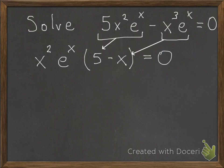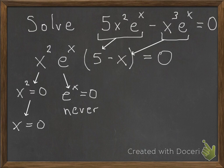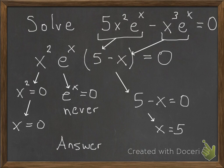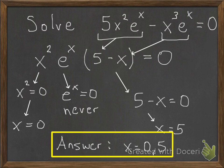Now, when you're looking for something that's factored equal to 0, just look when the factors are 0. So x squared is 0 when x is 0. e to the x is never equal to 0. 5 minus x is equal to 0 when x is equal to 5. So you just combine those, and your answer is going to be 0 and 5.